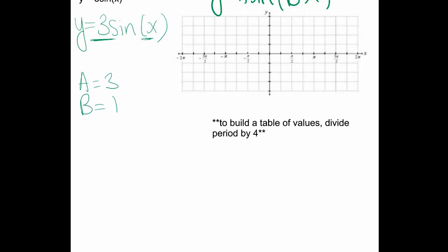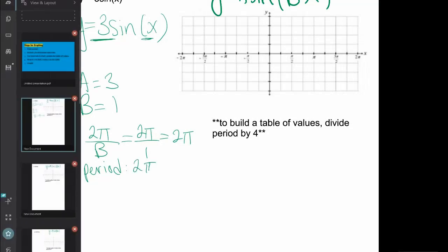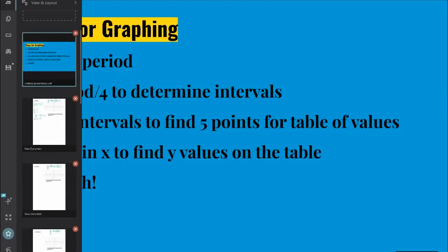Remember that the equation to find period is 2π over b. Meaning that if b is just 1, it will be 2π over 1, or simply 2π. So our period for this function is 2π. Looking back at our steps, we found the period.